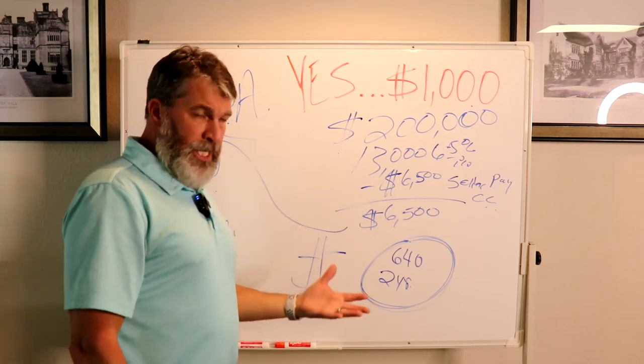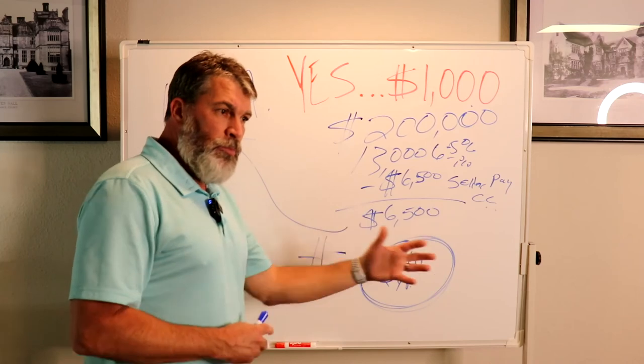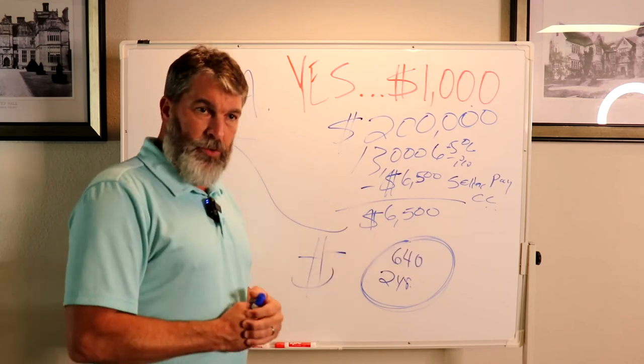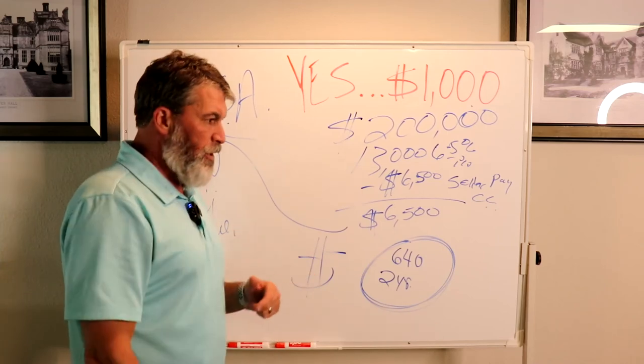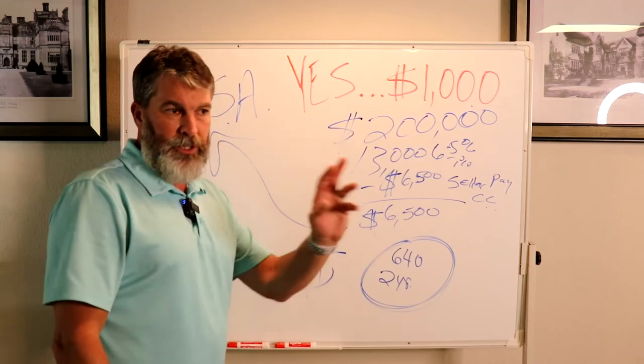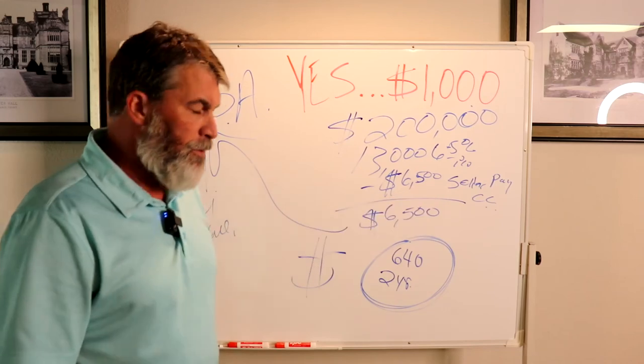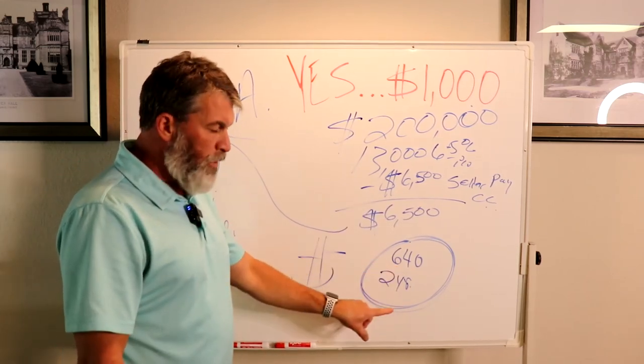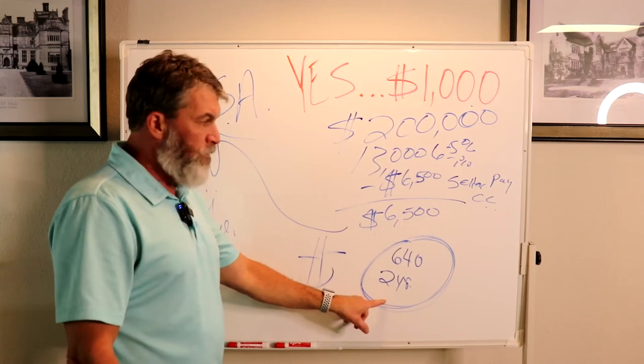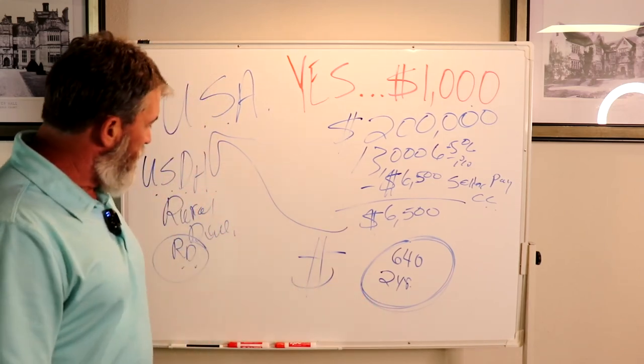So for example, let's say you've owned two homes before, you went through a divorce. You can now purchase a house through this. You went through a hardship, you can purchase a house. Maybe three years ago you filed bankruptcy. You can still purchase a house. As long as your credit score is 640 or higher and you have two years on the job, purchase a house.